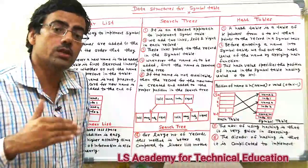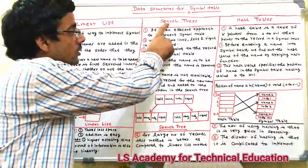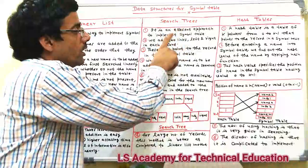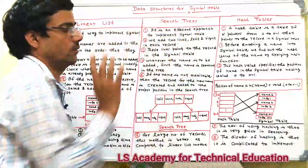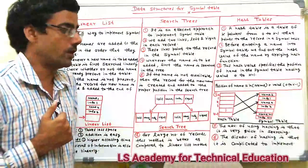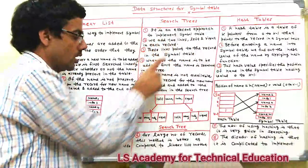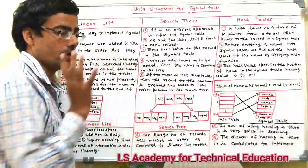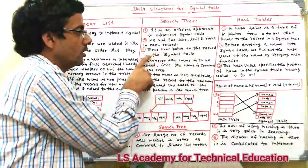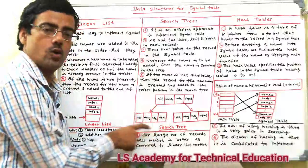This is the second way of storing information using a search tree, and it is a more efficient approach to implement the symbol table compared to the first method. Two links — left and right — are added in each record, and these links point to records in the symbol table.